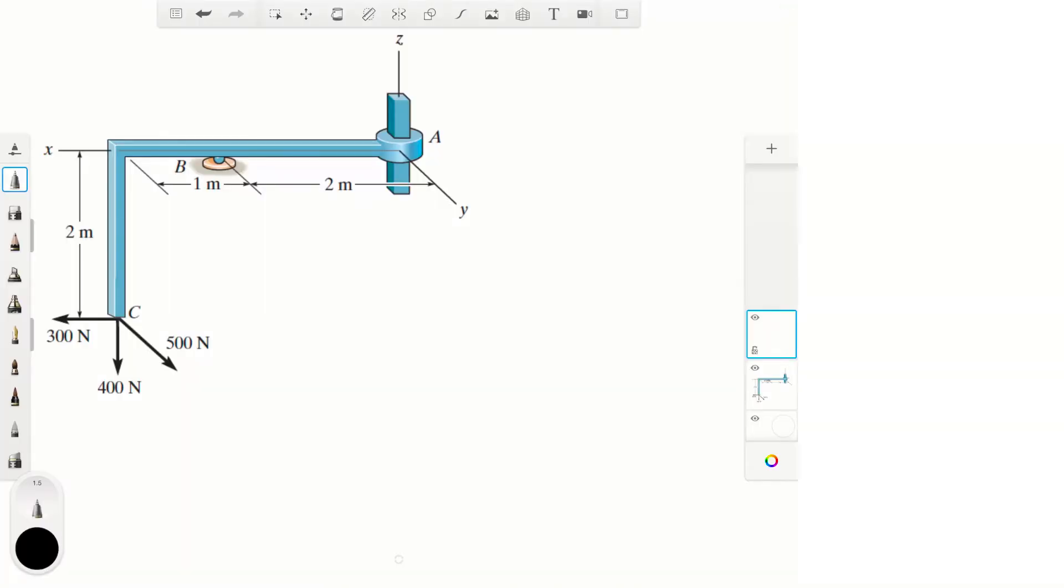Alright guys, let's do this problem that says the member is supported by a square rod which fits loosely through the smooth square hole of the attached collar at A and by a roller at B. Determine the components of reaction at these supports when the member is subjected to the loading shown.